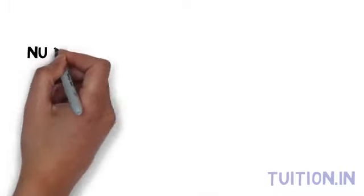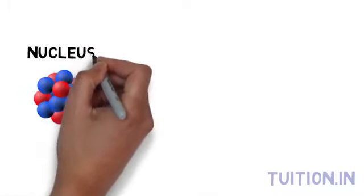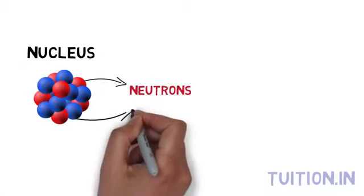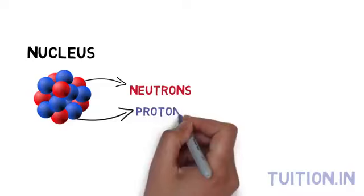Each atom has a dense center called the nucleus. The nucleus contains neutrons which have neutral electric charge and protons which are positively charged.